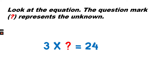Look at the equation below. The red question mark represents the unknown. So what do we know? We know that the first factor is 3 and we know that the product is 24.